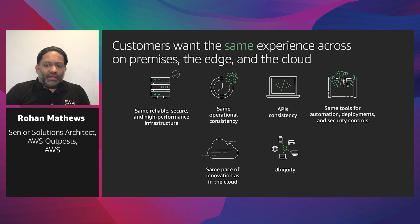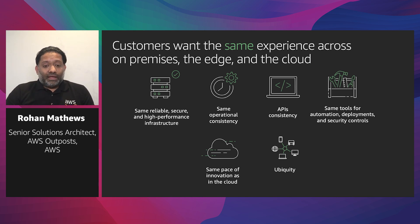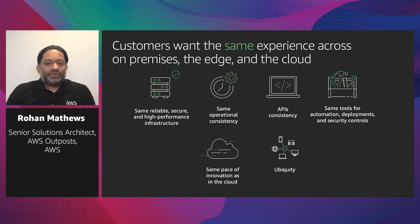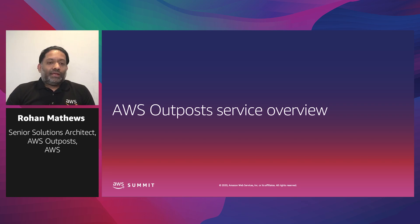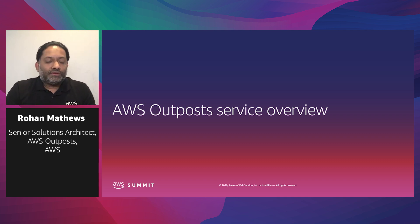Lastly, there's the need for ubiquity — being able to use AWS services anywhere, anytime, from any device. The overall message from customers was: we want the same experience across on-premise, the edge, and the cloud. So let's dive into the AWS Outpost service and talk about how we took that customer feedback and created the service.